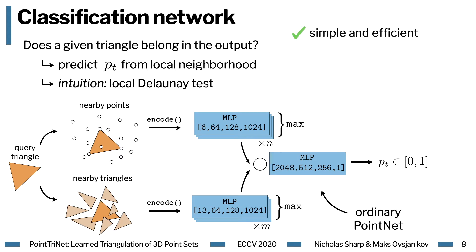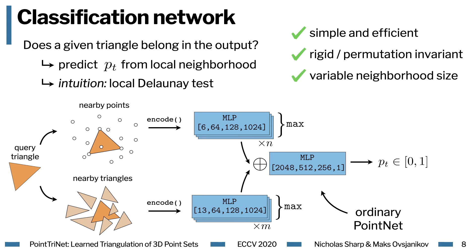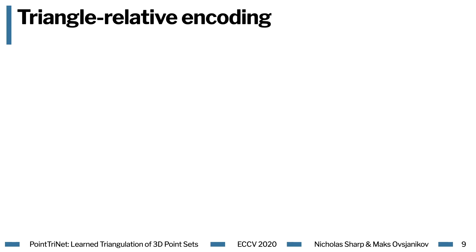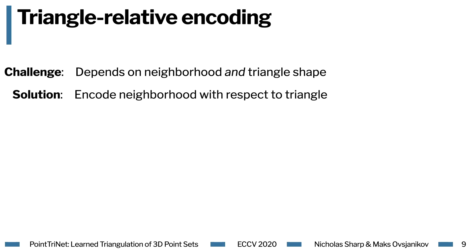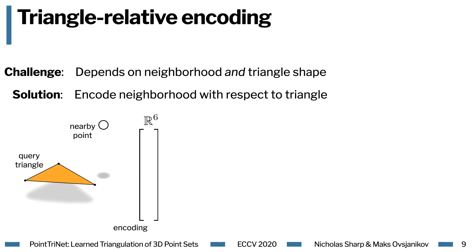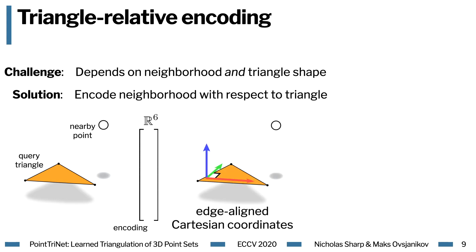This strategy has many benefits: it's simple and efficient, it'll be rigid and permutation invariant, and easily adapts to variable neighborhood sizes. One key to making this work is the choice of encoding strategy for nearby points. We expect that these predictions depend on both the arrangement of the local neighborhood and the triangle shape. We present a simple solution to encode nearby points in a way which naturally also records the triangle geometry. In particular, given a query triangle and some nearby point, we encode the point as a vector in R6. The first three coordinates are the Cartesian coordinates with respect to a frame aligned with one edge of the triangle.